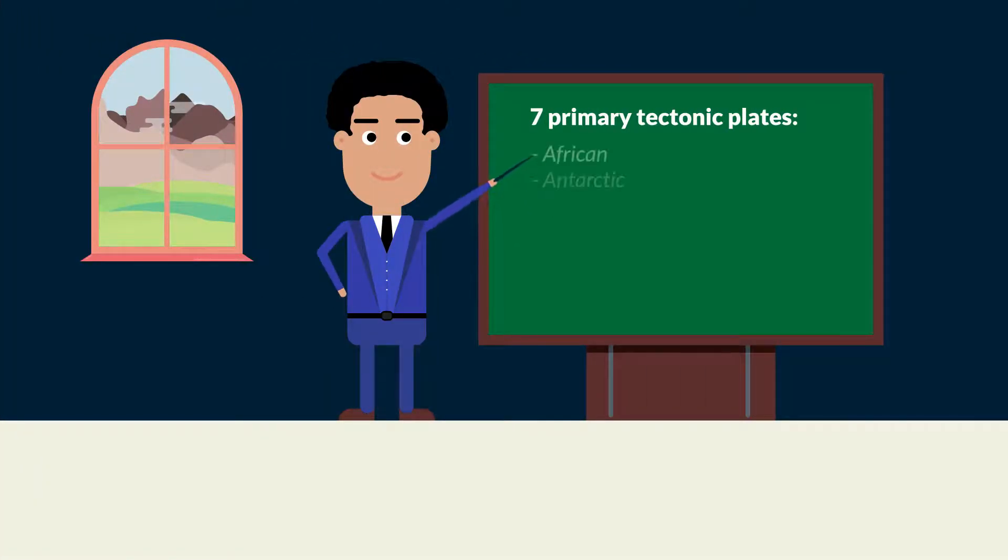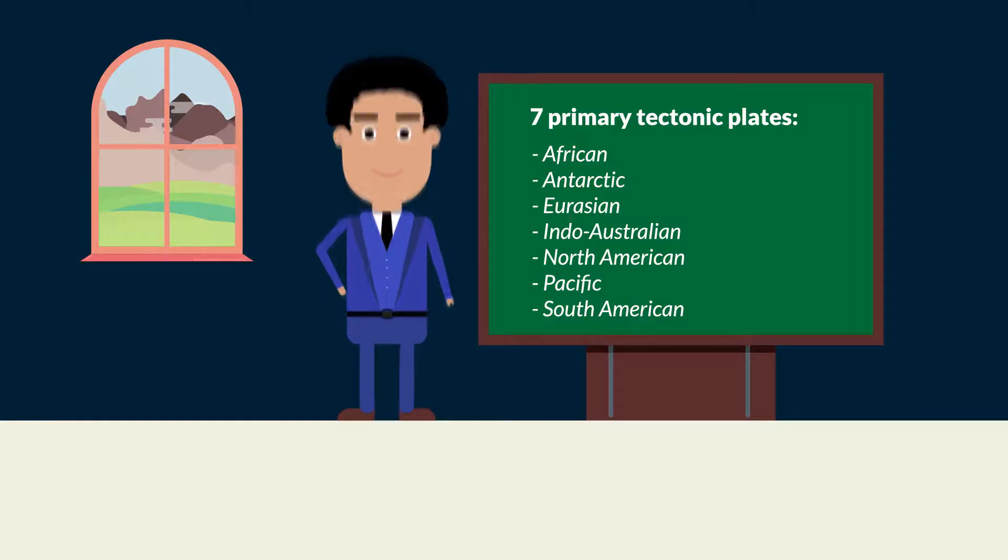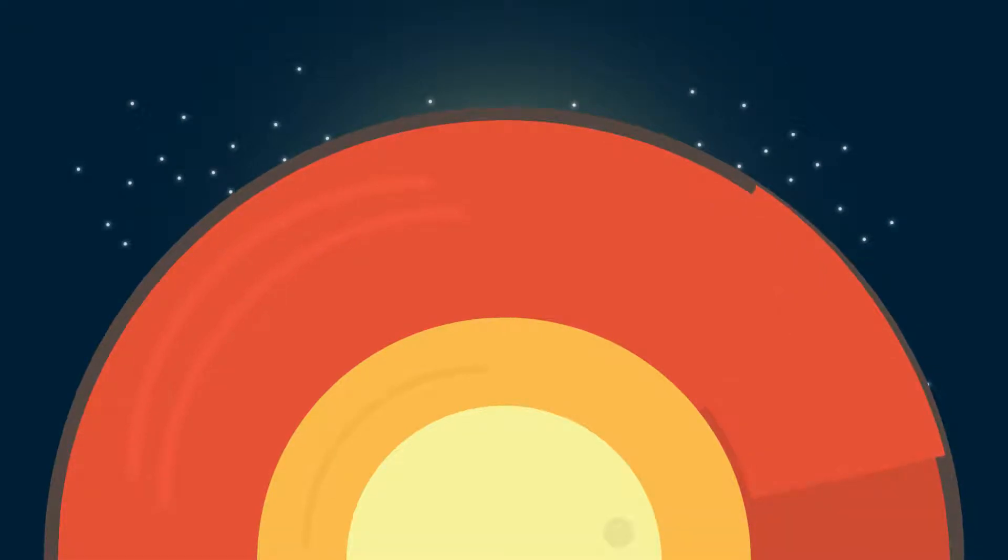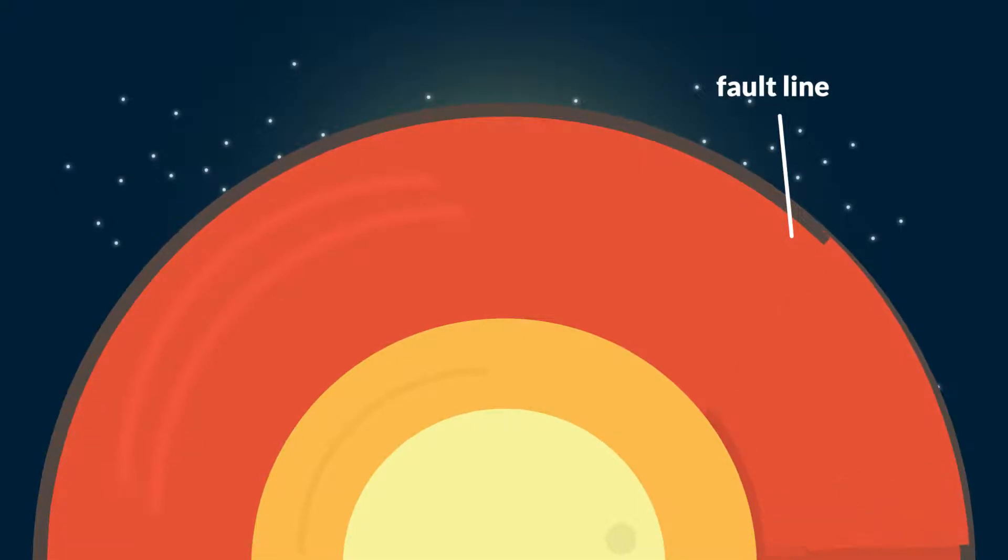There are seven primary tectonic plates and several smaller secondary and tertiary plates. Because of the underlying movement in the earth's mantle these plates can shift. This shifting of one plate causes it to rub against or push under or over an adjacent plate. The place where two plates meet is called a fault line and it's at these fault lines that earthquakes occur.